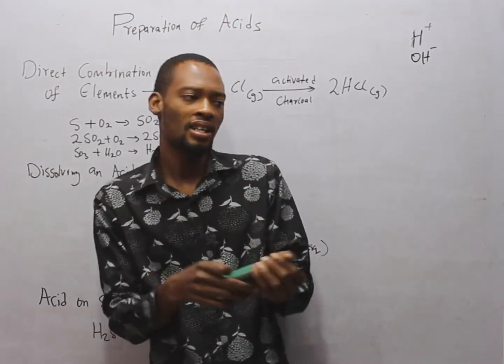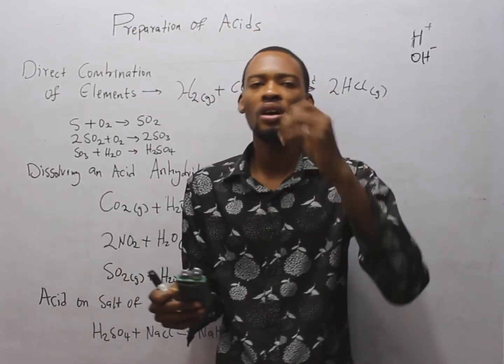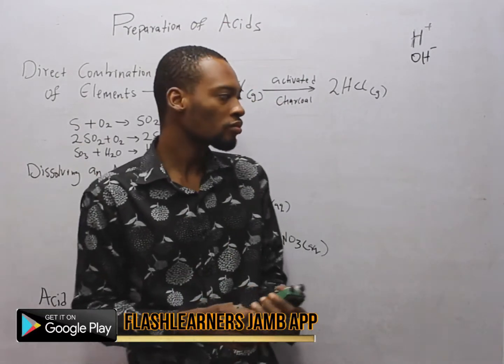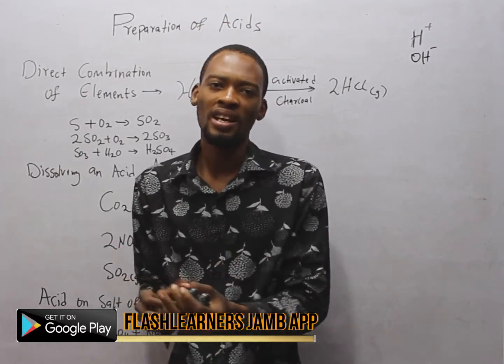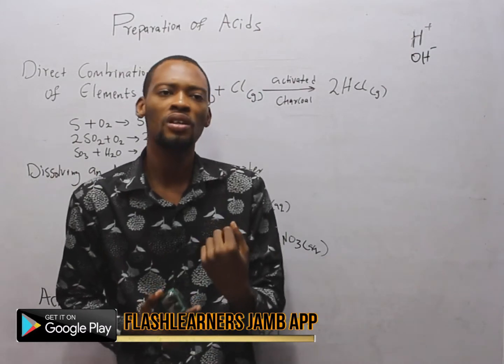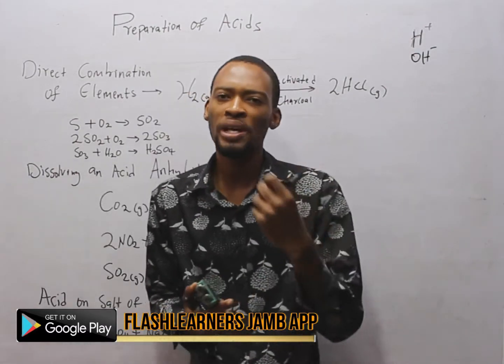According to Bronsted and Lowry, acids are proton donors while bases are proton acceptors. According to Lewis, acids are electron pair acceptors while bases are electron pair donors.